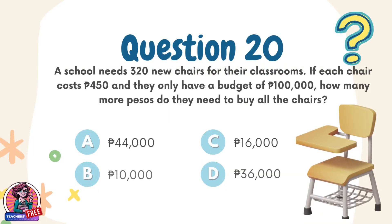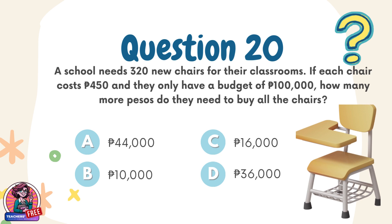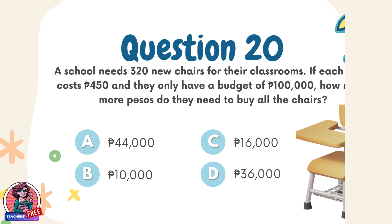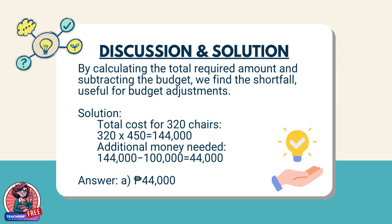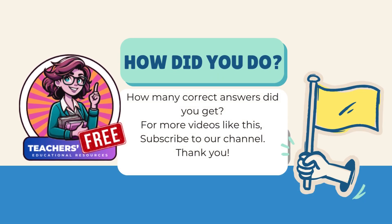Question 20. A school needs 320 new chairs for their classrooms. If each chair costs 450 pesos and they only have a budget of 100,000 pesos, how many more pesos do they need to buy all the chairs? Choices: A. 44,000 pesos, B. 10,000 pesos, C. 16,000 pesos, D. 36,000 pesos. Discussion: By calculating the total required amount and subtracting the budget, we find the shortfall, useful for budget adjustments. Solution: Total cost for 320 chairs: 320 × 450 = 144,000. Shortfall: 144,000 − 100,000 = 44,000. Answer: A. 44,000 pesos.